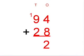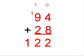Next you add the two numbers in the tens column, which are 9 and 2. 9 and 2 equals 11 plus the extra 1 equals 12.